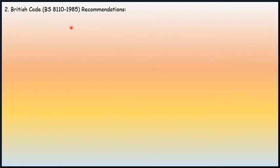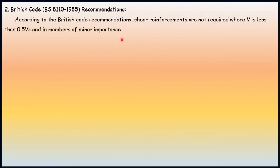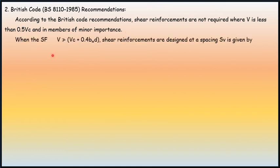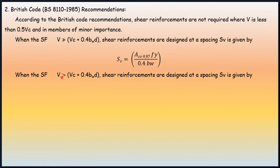British Code BS 8110-1985 recommendations: According to the British code, shear reinforcements are not required where V is less than 0.5 times Vc in members of minor importance. When the shear force V is not greater than Vc + 0.4 × bw × d, shear reinforcements are designed at spacing Sv = Asv × 0.87 × fy / (0.4 × bw).